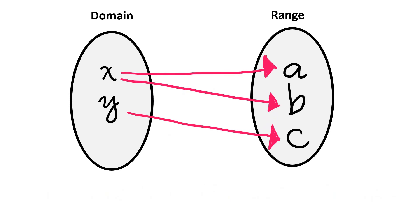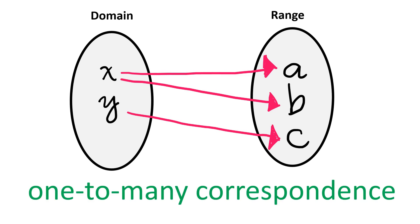This next mapping diagram shows that element x in the domain is being paired twice with elements in the range, A and B. Therefore, this is not a function, and it's called one-to-many correspondence.